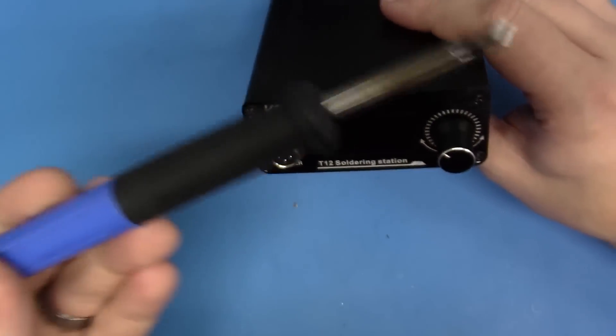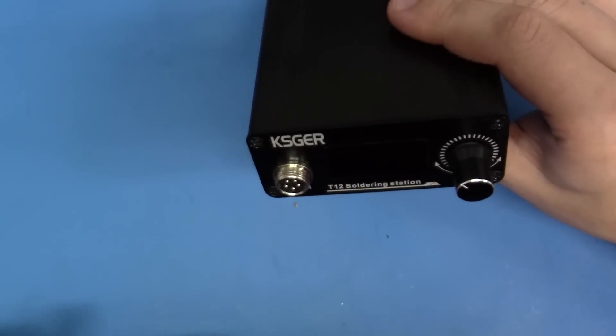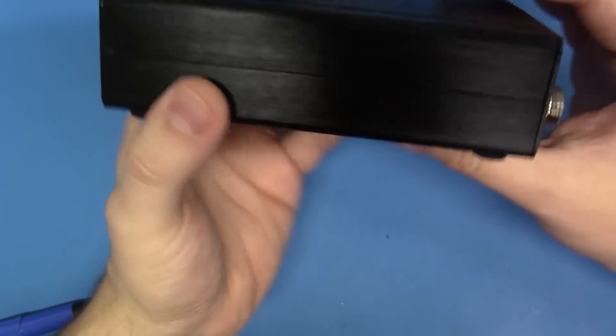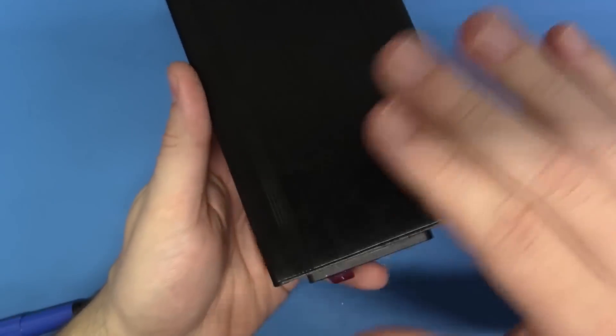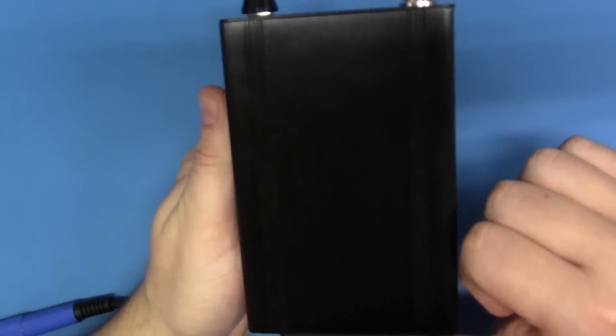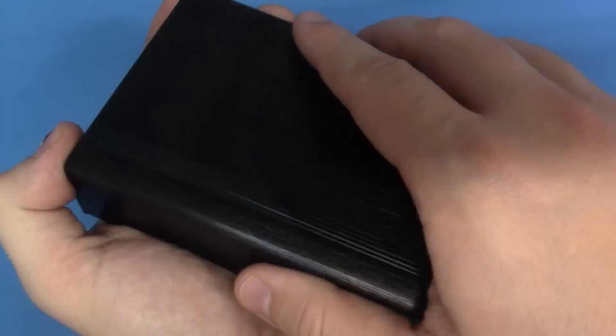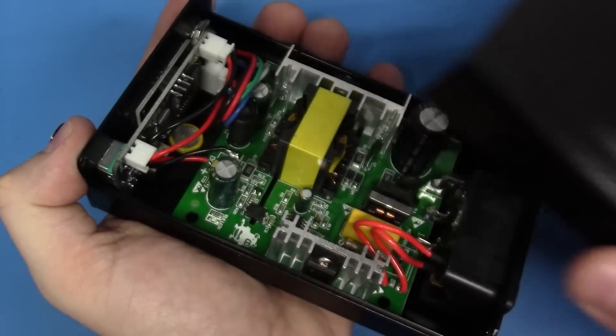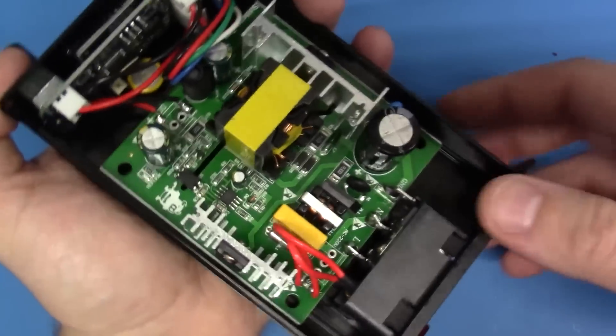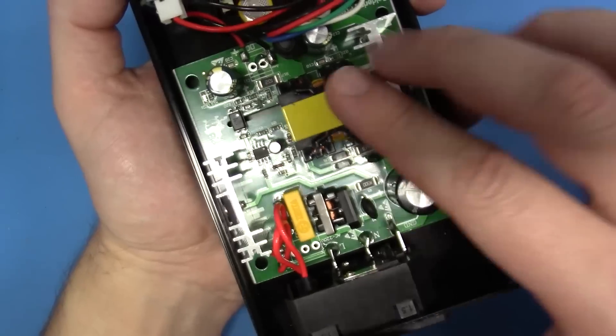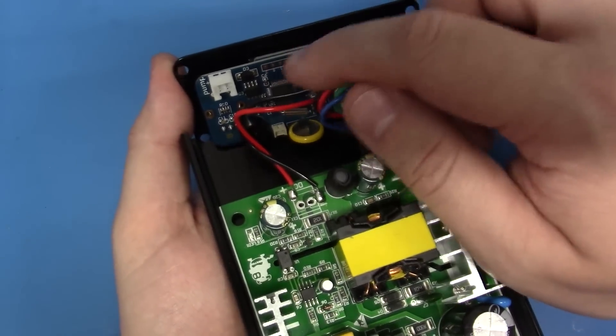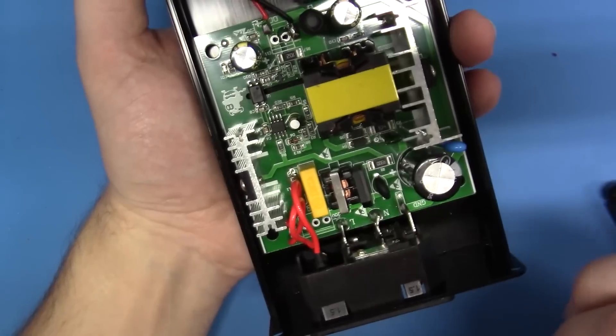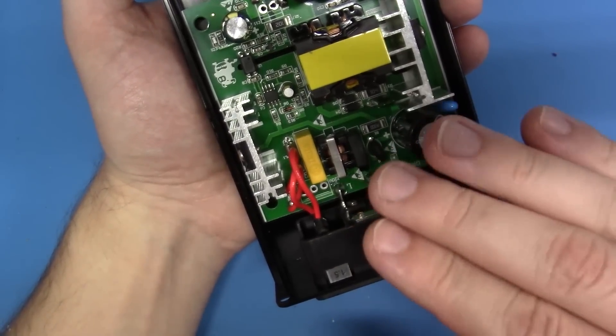Before we begin reviewing the actual soldering performance, we're going to be looking at some safety stuff. We're going to start in the back here with the AC mains input. We're going to break open the top, and we're going to take a look at the power board. Let's very carefully pull this top off. We have a great view here of the inside, looking at the power board and the logic of the soldering station.